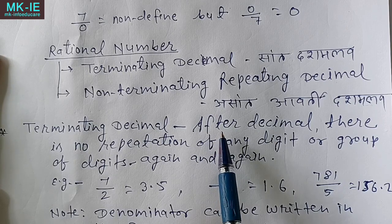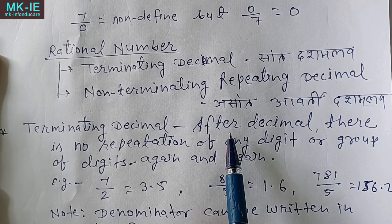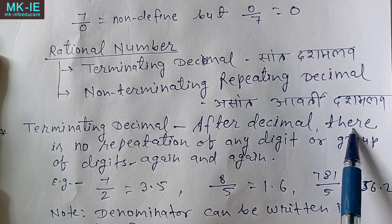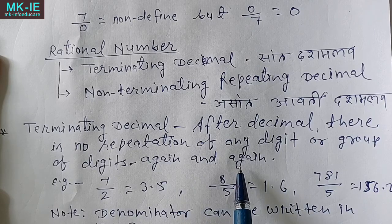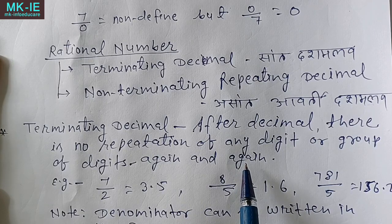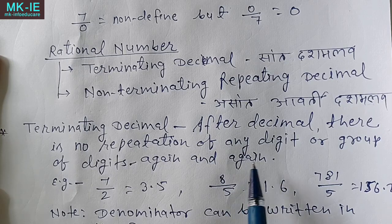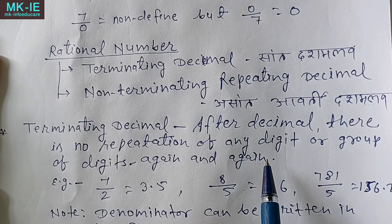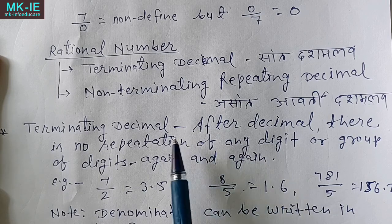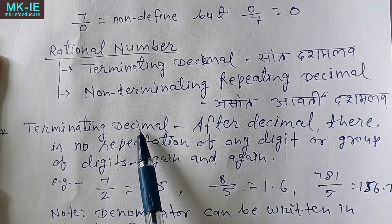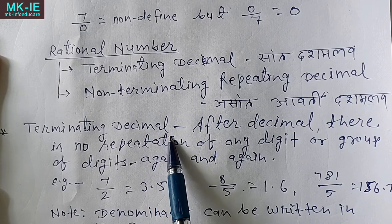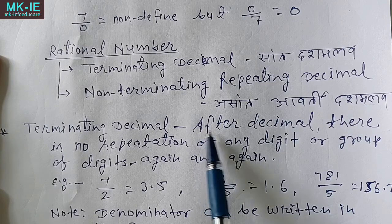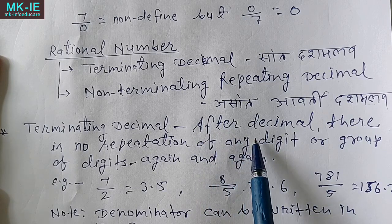When we convert any fraction to decimal form, if after the decimal point there is no repetition of any digit or group of digits — meaning the digits do not repeat again and again — then we call that decimal form a terminating decimal.